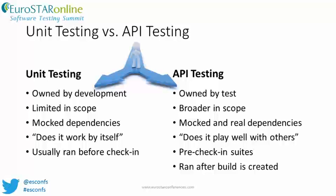Sometimes API testing is confused with unit testing, so let's look at some of the key differences. Unit testing is owned by developers who implement the API and is usually targeted towards the functions or methods contained within a class. Developers will generally use stubs or mocks to emulate dependencies, and unit tests are generally designed to test the happy path or answer the question: does this function do what it is contractually supposed to do?